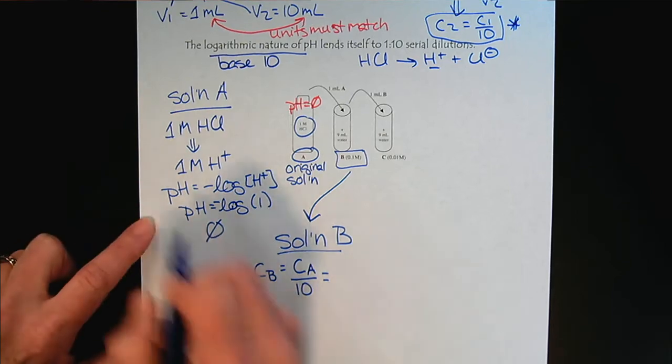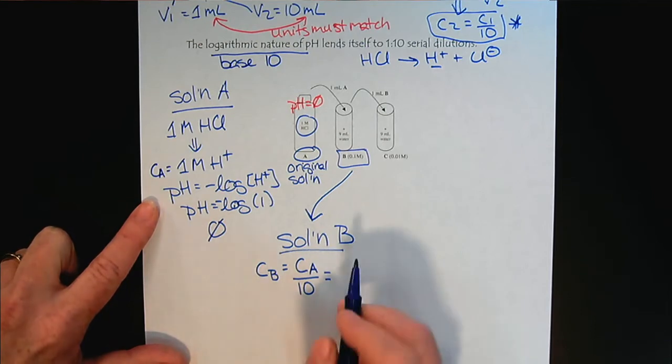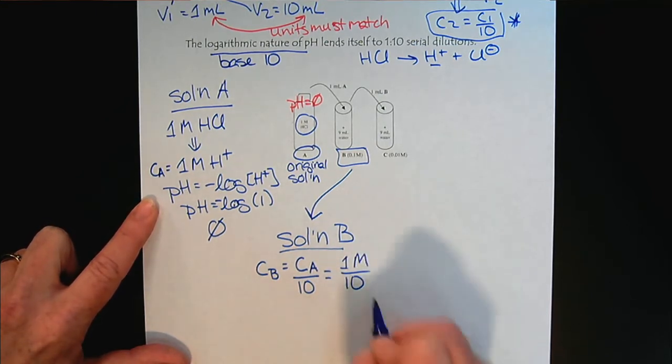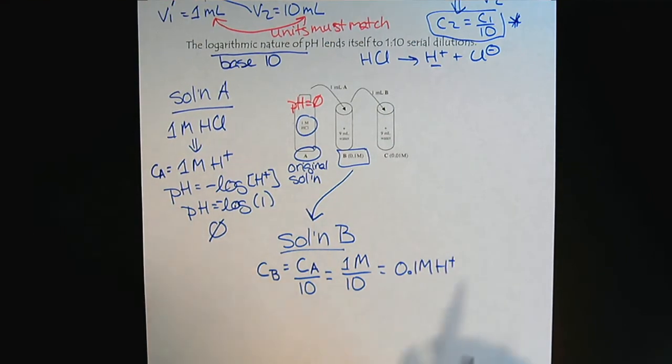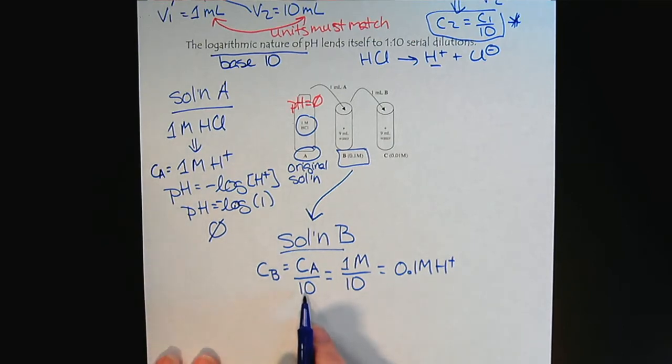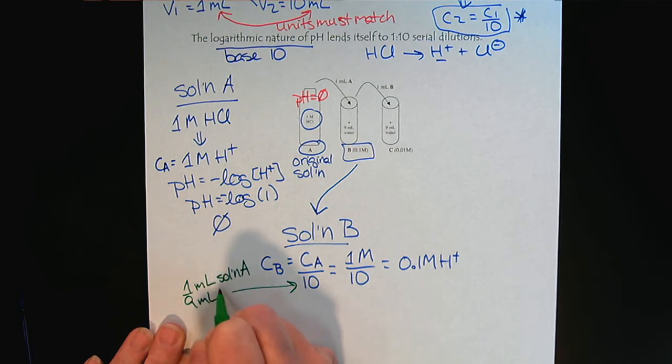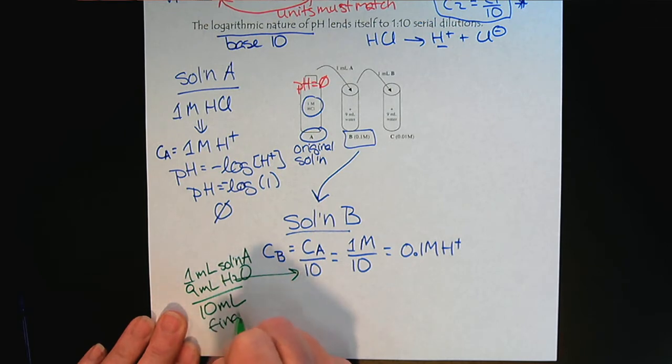So the concentration of solution A, and we're just going to focus on the hydrogen ions here because we're linking to pH. So that would be 1 molar divided by 10, or 0.1 molar H+. So if you're wondering where the 10 milliliters came from, the final volume is 10 milliliters because we had 1 milliliter of solution A and then 9 milliliters of water. So we have 10 milliliters as our final volume.